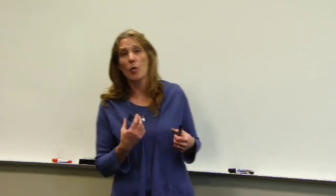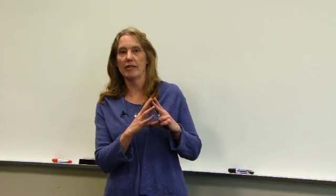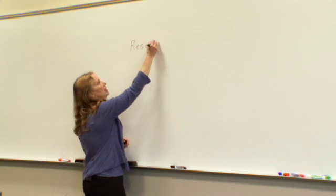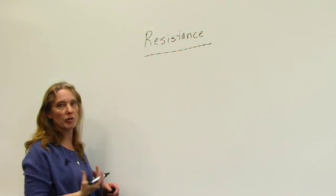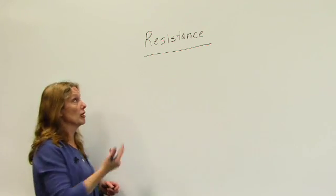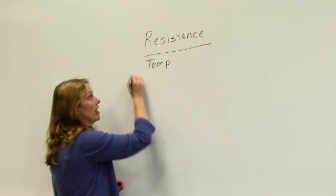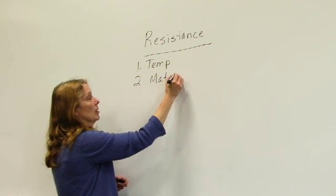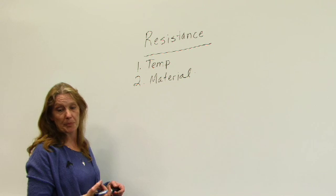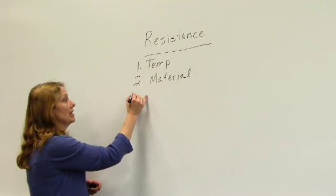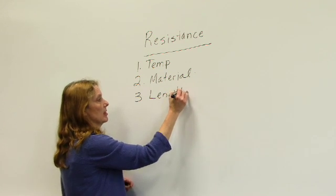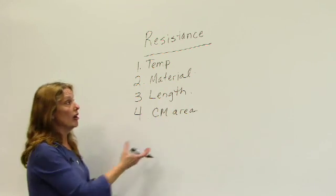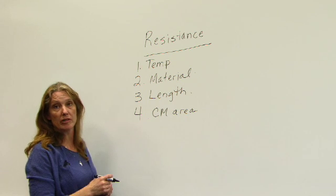So the first thing we want to talk about is when we talk about our wire resistance, we have to look at the actual size of the wire. Now remember, resistance of a conductor is dependent upon four different things: temperature, ambient temperature of the area; material, most common conductors are aluminum or copper; length of the conductor; and our circular mill area or the area of the conductor. All these four factors determine how much resistance I have in my conductor.